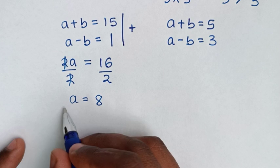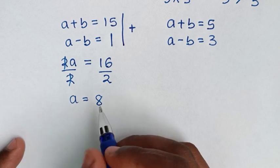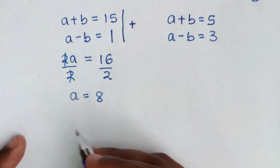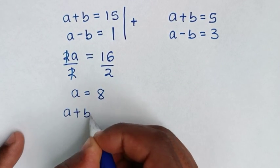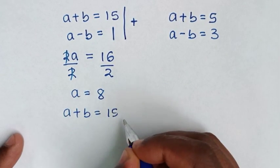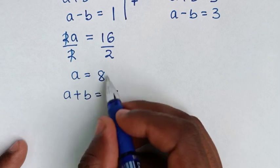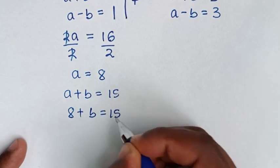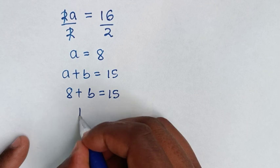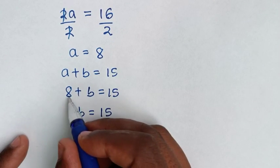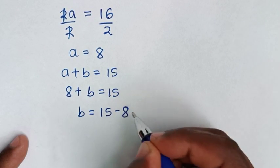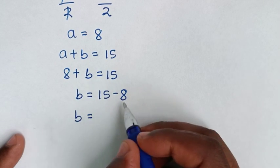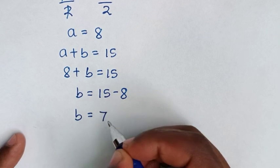Now that we have a, we substitute into the first equation a plus b equals 15. Substituting a equals 8 gives 8 plus b equals 15. Taking 8 to the other side, b equals 15 minus 8, which is 7.